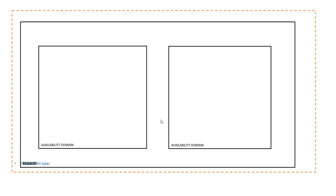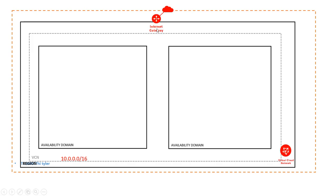We are going to start out with the internet gateway, the virtual cloud network — this is what we are going to create initially. In the past we've created the VCN with all the resources with the subnet. In order to secure this infrastructure, this is the right way to do it. You create a VCN and add your subnets and security list and route tables so you can allow the applications which need to access.